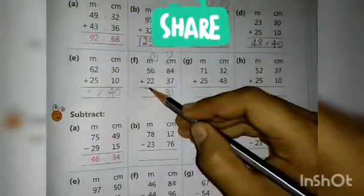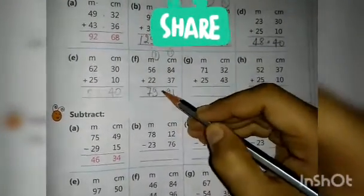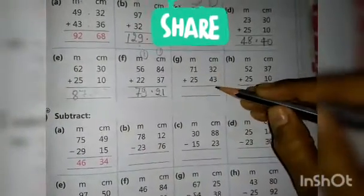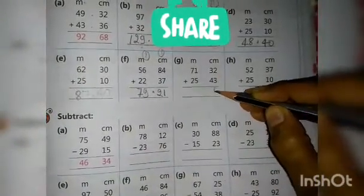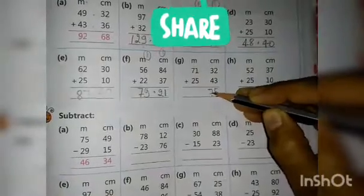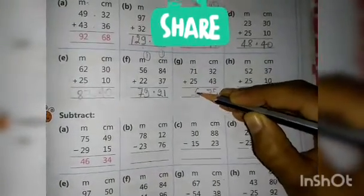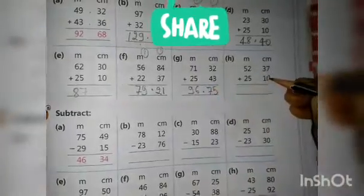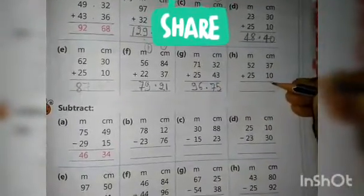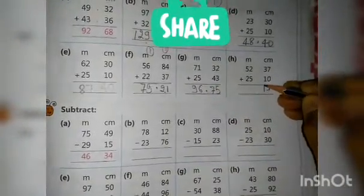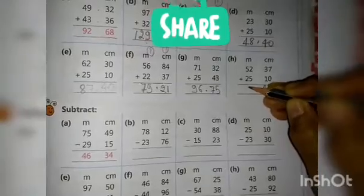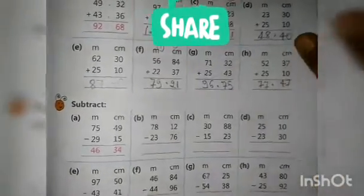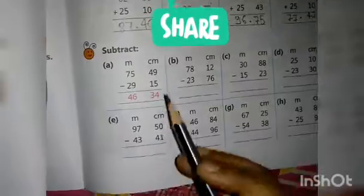Here: 5 plus 2 is 7, giving 79.21. Make a decimal point also. Then 3 plus 2 is 5, 4 plus 3 is 7. Make a decimal point, then 5 plus 2 is 7, 7 plus 2 is 9, 7 plus 0 is 7, 3 plus 1 is 4. Point: 5 plus 2 is 7, 5 plus 2 is 7. Now come to subtraction.